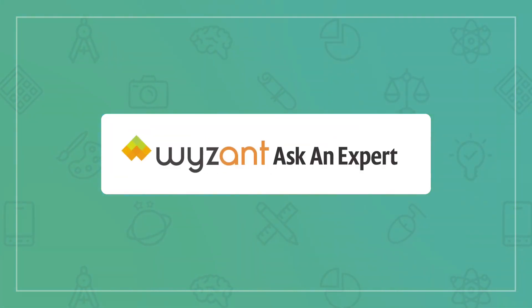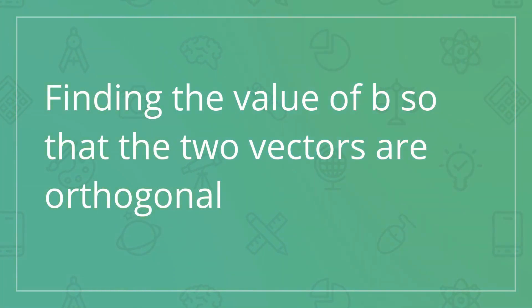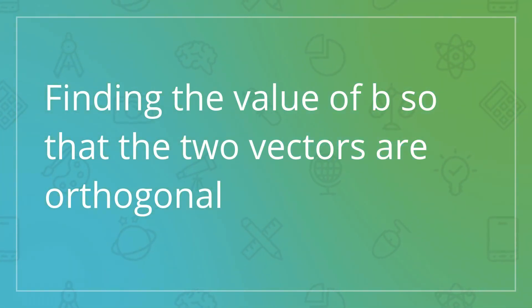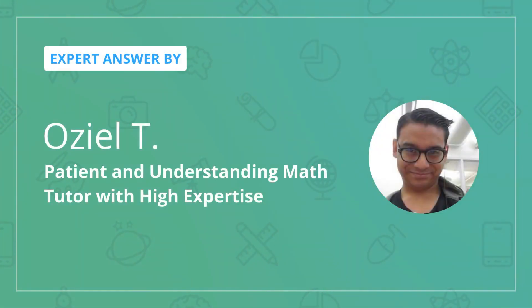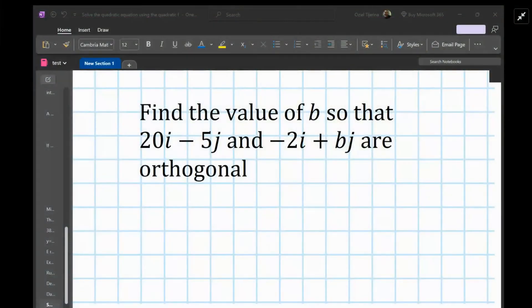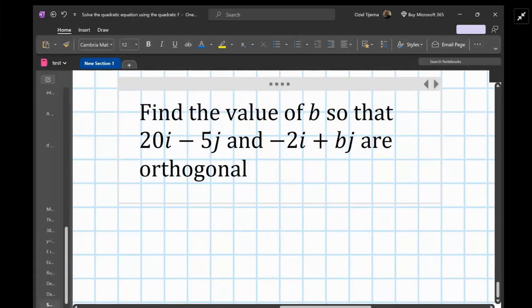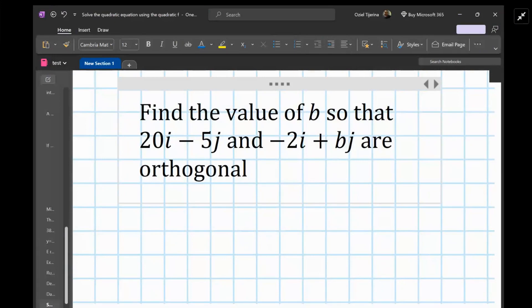We're looking at this problem: find the value of b so that 20i minus 5j and negative 2i plus bj are orthogonal.